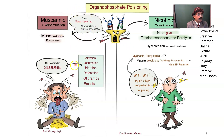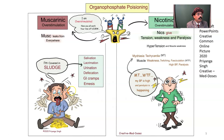For muscarinic overstimulation, we can remember the mnemonic SLUDGE. All secretions will be high: salivation from salivary glands such as the parotid, submandibular, and sublingual glands; lacrimation from the lacrimal gland; urination from the bladder; defecation from the gastrointestinal tract with cramping; and vomiting — emesis. SLUDGE is the manifestation of muscarinic overstimulation by organophosphate compounds.